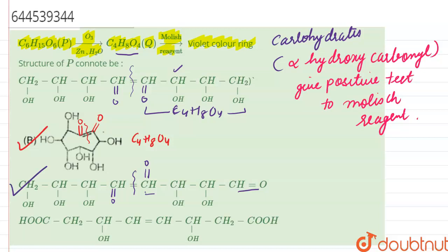In the last option, since we have an acid, we already have an acid, and this cannot give us positive Molisch test, since we need alpha hydroxy carbonyl compound. And hence, this is also our answer.